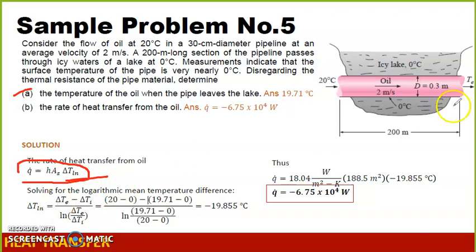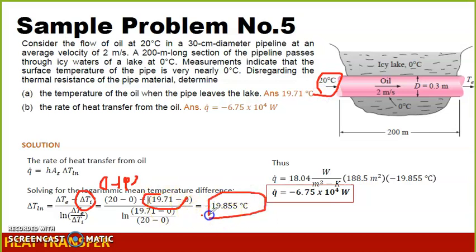We have Delta T exit. That is 0 minus 19.71. Actually this is backwards, no? It should be 0 minus 19.71, and then 0 minus 20. The same result actually, negative 19.855 degree Celsius.